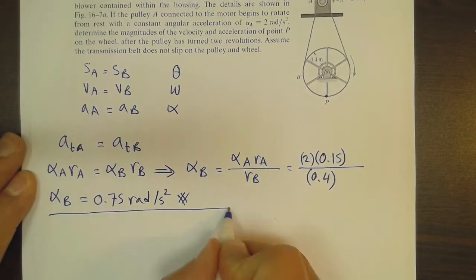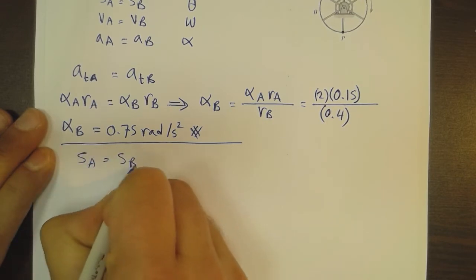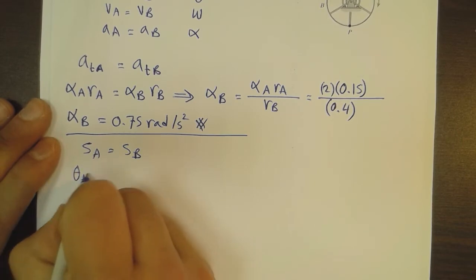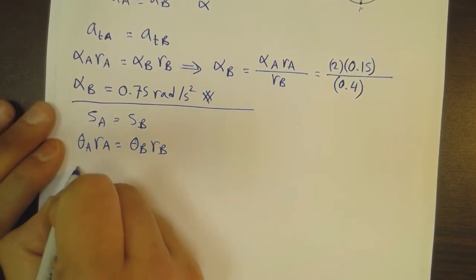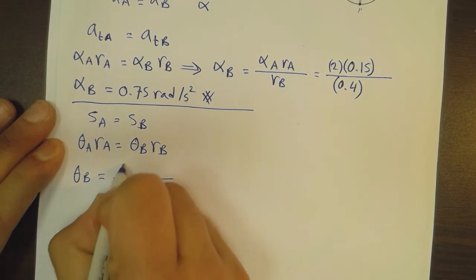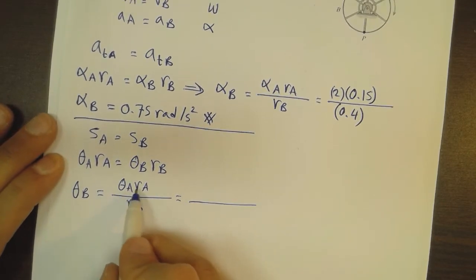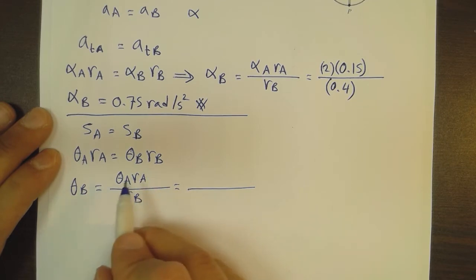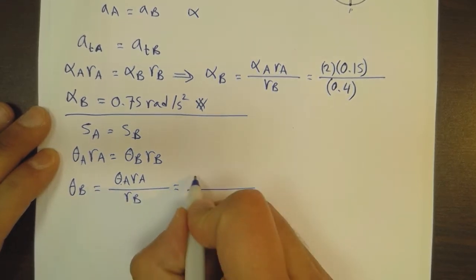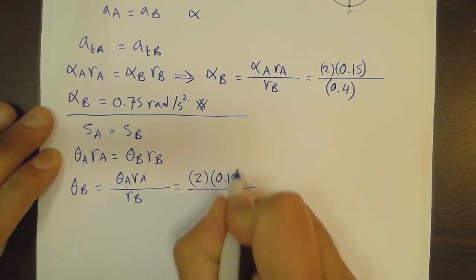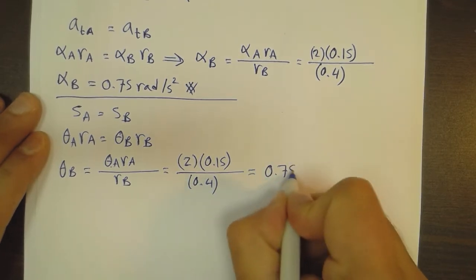Moving to the displacement, which we said is equal: S_A equals S_B, so theta_A times R_A equals theta_B times R_B, and theta_B equals theta_A times R_A over R_B. The angular displacement can be given in revolutions, radians, or degrees. In this example it was given in revolutions, so theta_B equals 2 revolutions times 0.15 over 0.4, which gives us 0.75 revolutions.